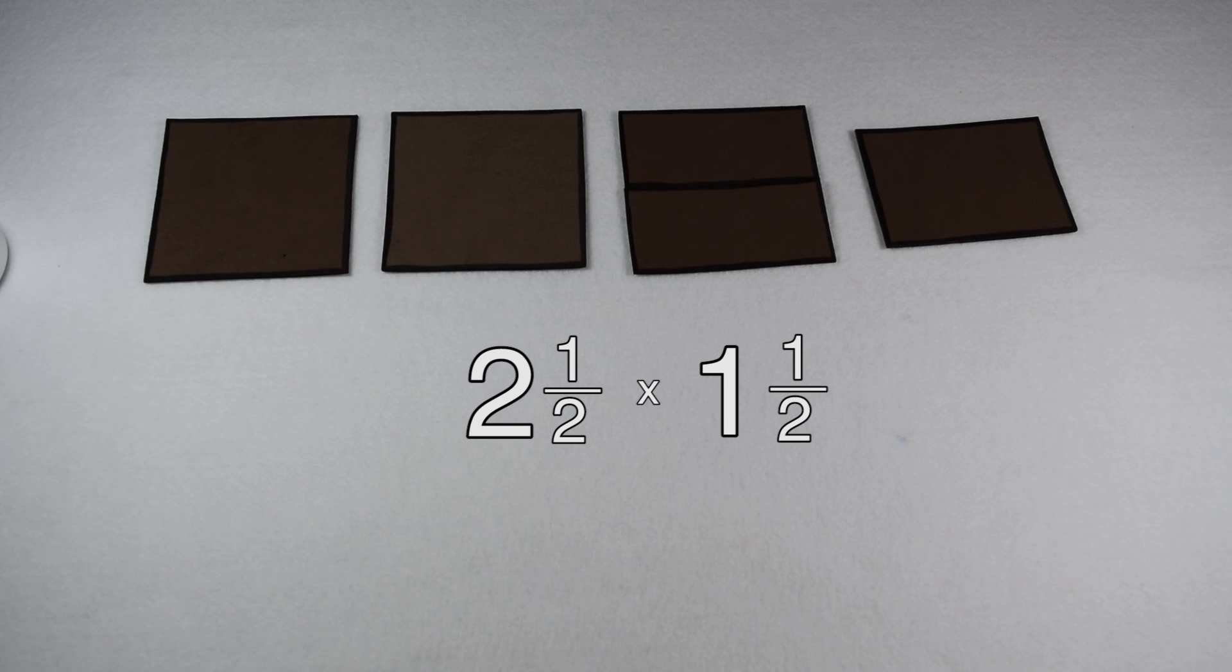Instead, to multiply two and a half by one and a half, we're going to have to make improper fractions. To change two and a half to an improper fraction, I multiply my denominator of two by my whole number of two to give me four pieces, plus the one I already have, to give me a total of five halves.